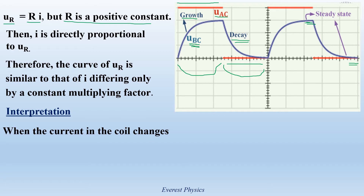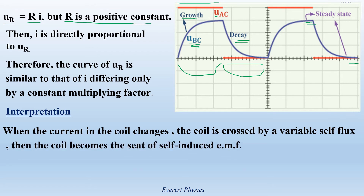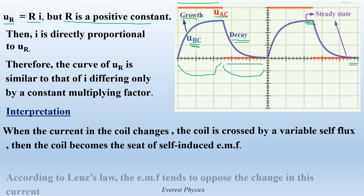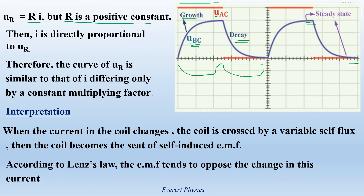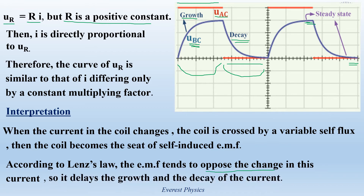When the current in the coil changes, the coil is crossed by a variable self-flux. Then the coil becomes the seat of a self-induced electromotive force. According to Lenz's law, this electromotive force tends to oppose the change in the current — it delays its growth and delays its decay. As you see in the figure, the current does not reach its maximum value instantly; we have a delay in the growth. Similarly, in the decay process, the current does not reach its minimum value of zero instantly — we have a delay in the decay.